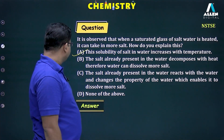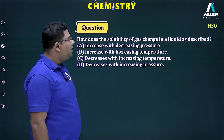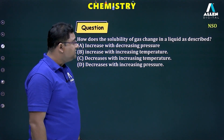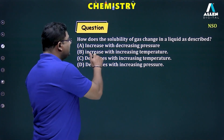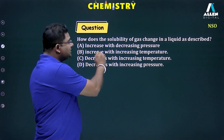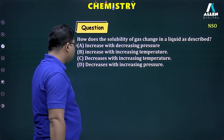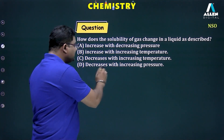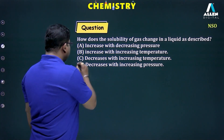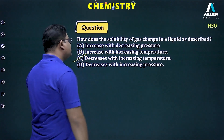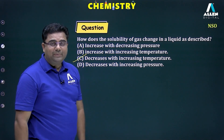Question 3: How does the solubility of gases in liquid change? The options are: increase with decreasing pressure, increase with increasing temperature, decrease with increasing temperature, or decrease with increasing pressure. The correct answer is option C: the solubility of gases in liquid decreases with increasing temperature.